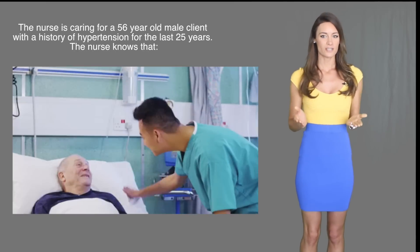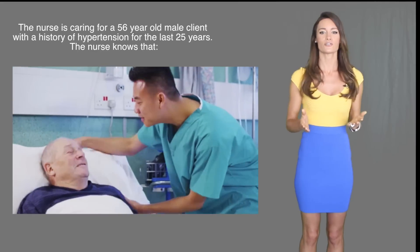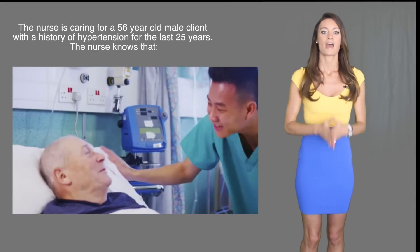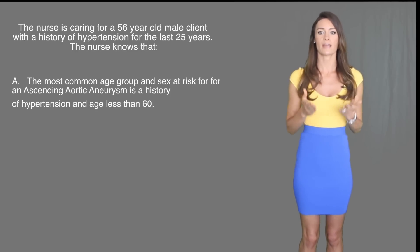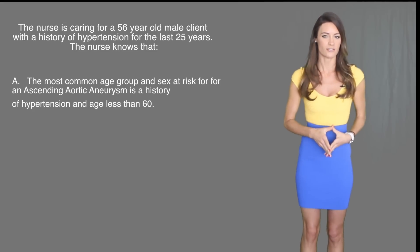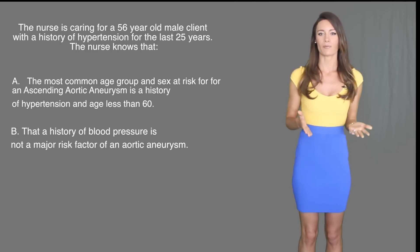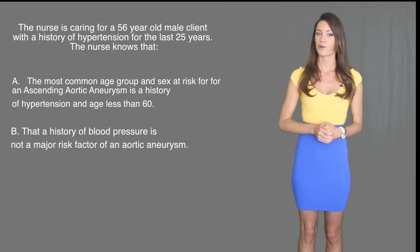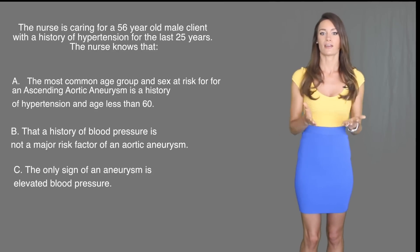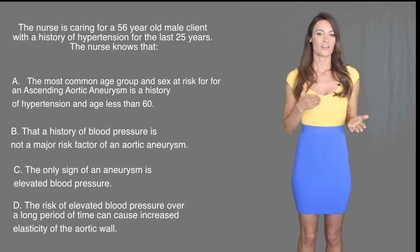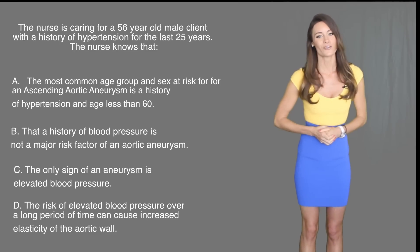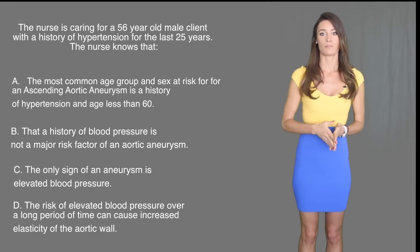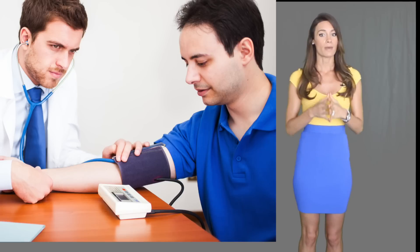Next question. The nurse is caring for a 56-year-old male client with a history of hypertension for the last 25 years. The nurse knows that: A — the most common age group and sex at risk for an ascending aortic aneurysm is a history of hypertension and age less than 60. A is a correct statement because the most common risk factors for ascending aortic aneurysm are men who are less than 60 years of age with a history of hypertension.